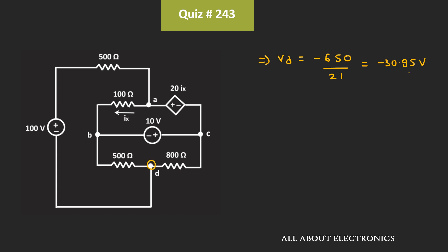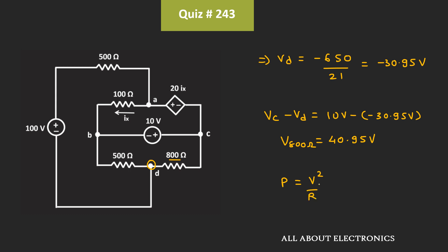That means the voltage at this node is equal to -30.95V. So the voltage across this 800 Ohm resistor will be equal to Vc - Vd = 10V - (-30.95V) = 40.95V. So this is the voltage across the 800 Ohm resistor. From this, we can find the power absorbed by this resistor. The power absorbed is P = V² / R = (40.95V)² / 800 Ohm, which comes out to 2.096W.